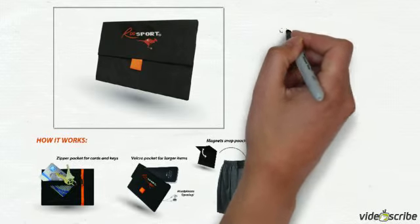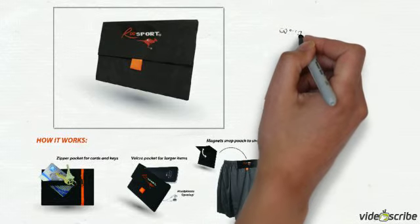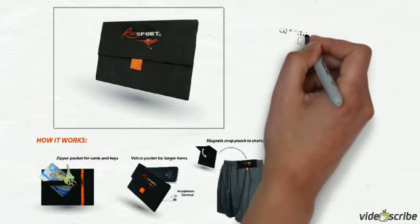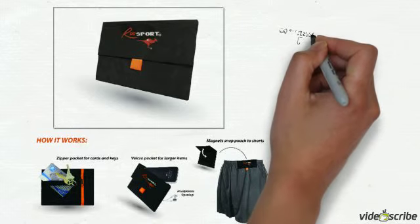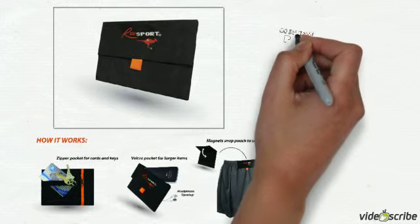With a zippered, neoprene pocket for cards and keys, and a Velcro pocket to hold your larger items, you'll never be without what you need again. Two strong, safe magnets easily snap together on the waistband of your pants, shorts, or skirt, holding the pocket in place.